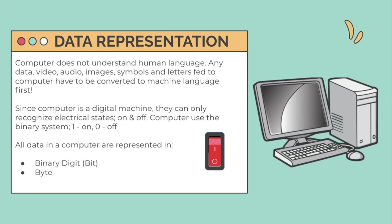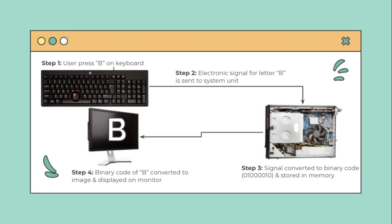Let's look at the first content: data representation. Computers do not understand human language at all. Any data — video, audio, images, symbols, and letters — fed to a computer has to be converted to machine language first. Since a computer is a digital machine, it can only recognize electrical states: on and off. Computers use the binary system — one as on, and zero as off. So all data in a computer is represented in binary digits, bits and bytes.